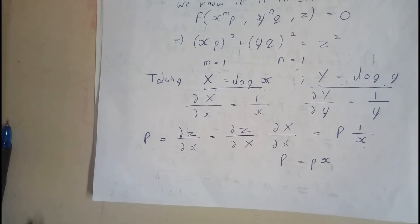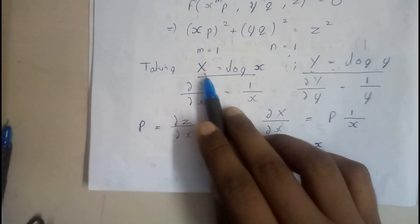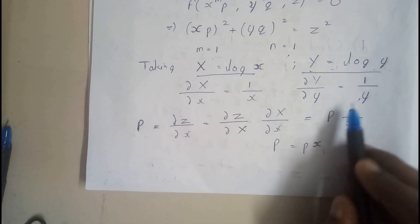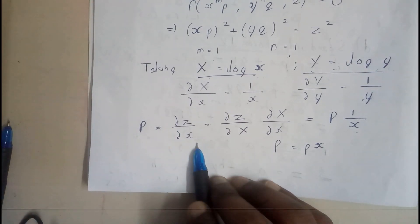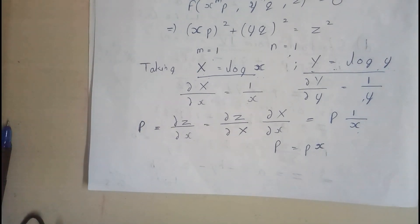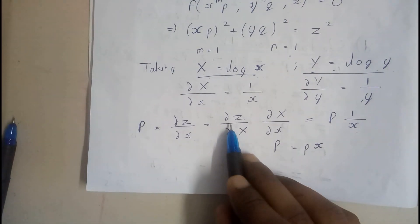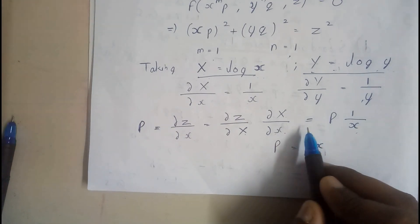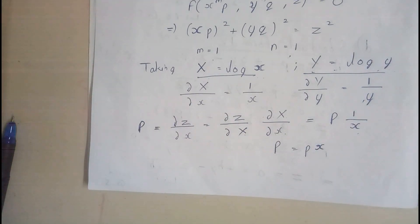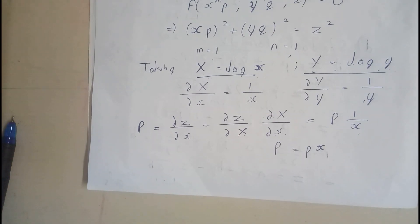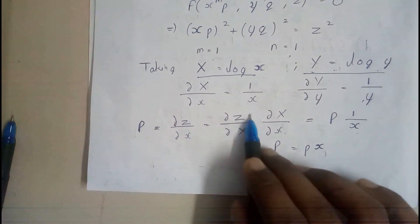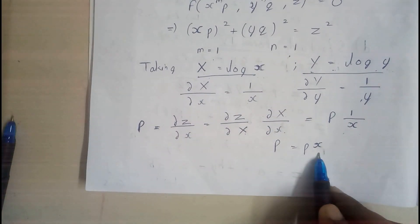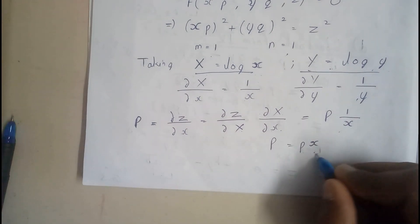Differentiating with respect to x we get this, and with respect to y we get this. We know p = ∂z/∂x. Using the chain rule: ∂z/∂X · ∂X/∂x = ∂z/∂x. Since ∂X/∂x = 1/x, we get capital P = p · x, or equivalently (1/x) · capital P equals p.